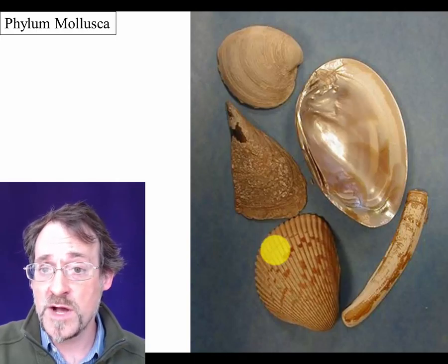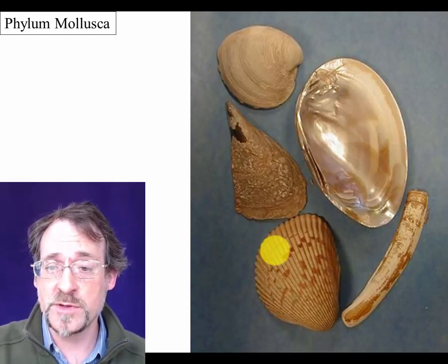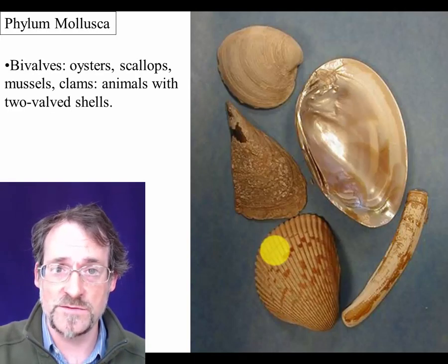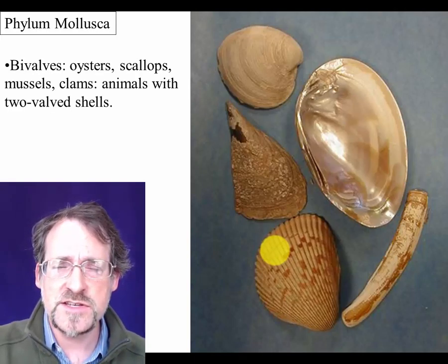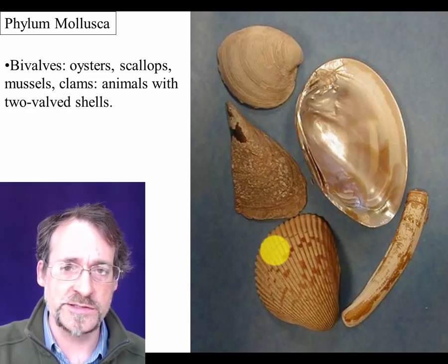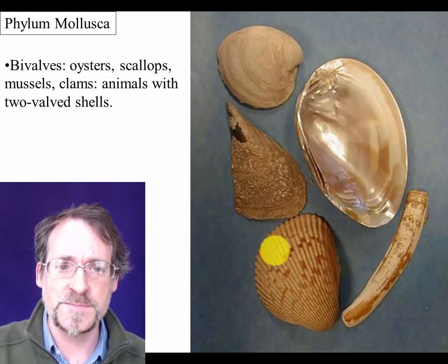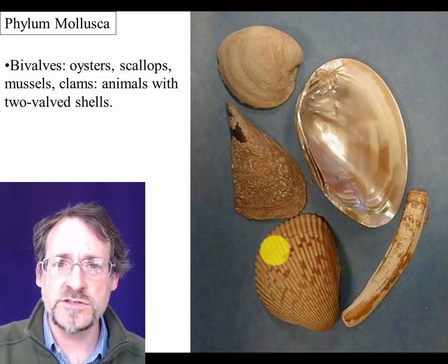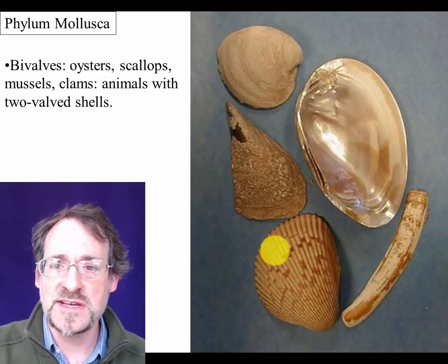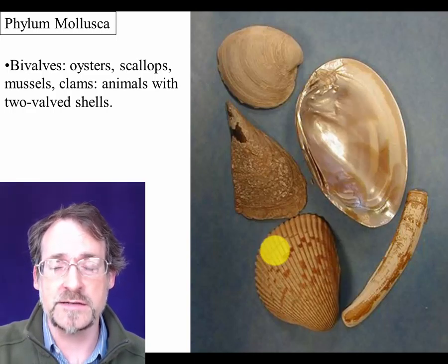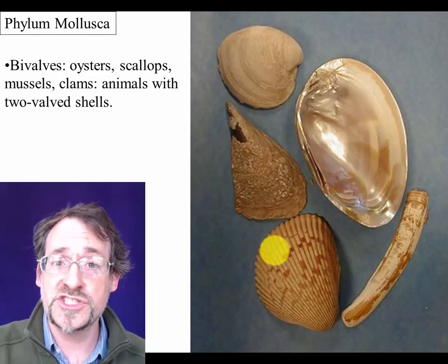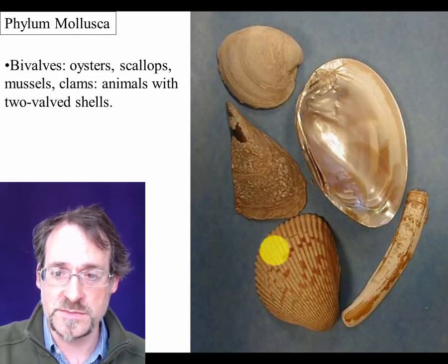The next group of mollusks is the bivalves — the mollusks most likely to end up on your dinner plate. They're oysters, scallops, mussels, clams, and a large variety of other two-shelled organisms. These are mollusks where there are two mirror-image halves to the shell, and this group is extraordinarily modified from the ancestral mollusk form.